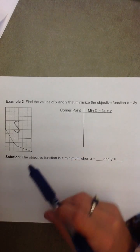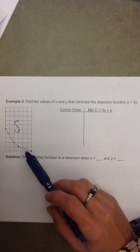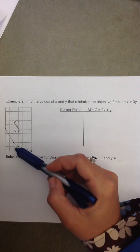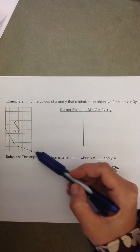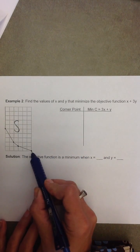So, in the picture over here, we have our feasible set S that looks like it's defined by 1, 2, 3, 4, probably 5 different lines.